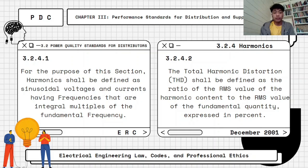Harmonics is defined as sinusoidal voltages and currents having frequencies that are integral multiples of the fundamental frequency. The total harmonic distortion, or THD, is defined as the ratio of the RMS value of the harmonic content to the RMS value of the fundamental quantity, expressed in percent.